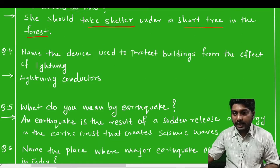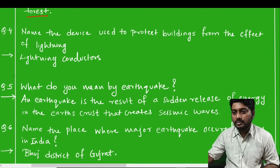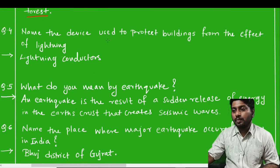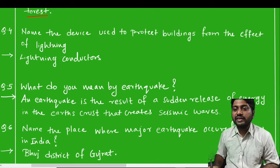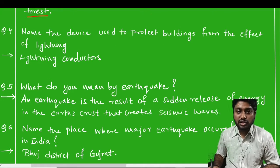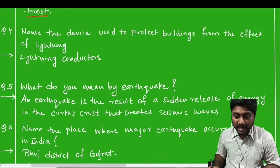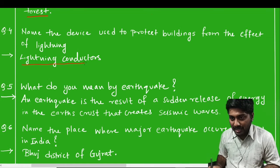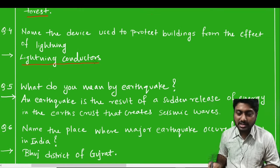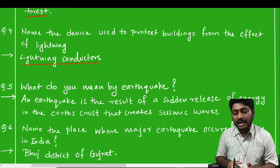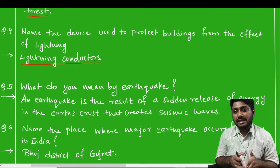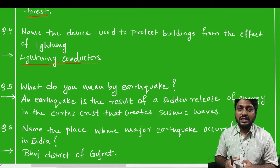Question number four: name the device used to protect the building from the effect of lightning. The device which protects the building from lightning is called a lightning conductor. Lightning conductors act like an earthing connection, which carries any unwanted charges to the earth's surface.